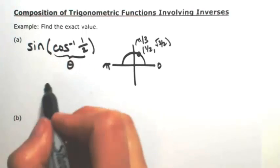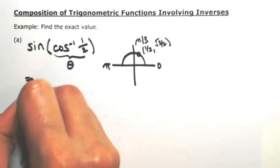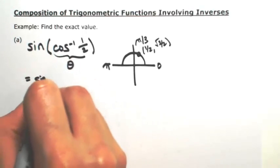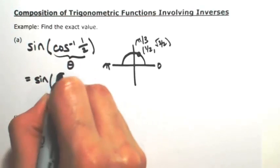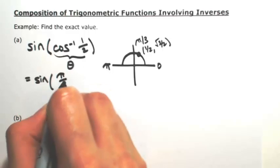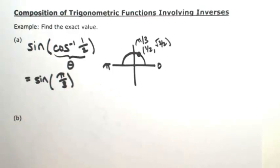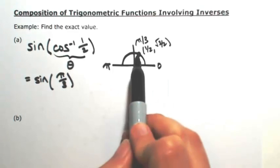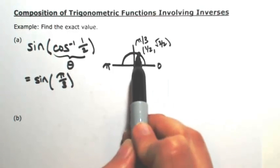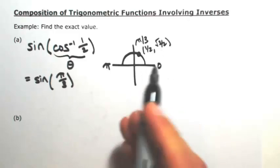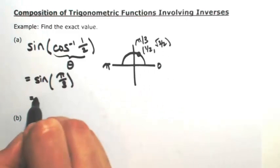So this angle is pi over three, but we're not done — that's just the first part. Now we have sine of pi over three, and at pi over three the sine is going to be square root of three over two.